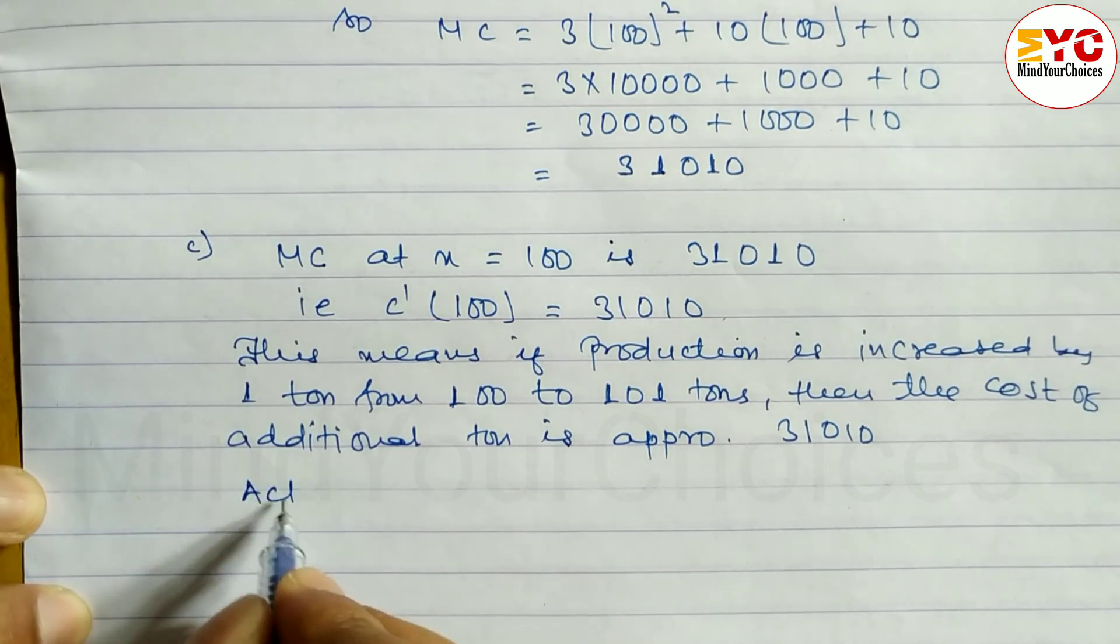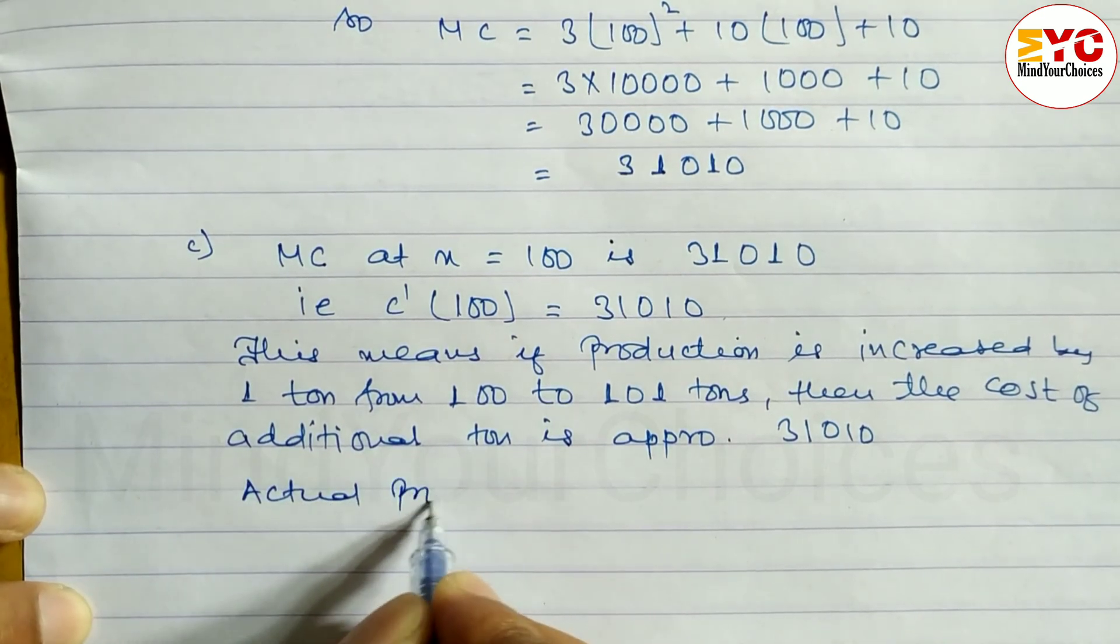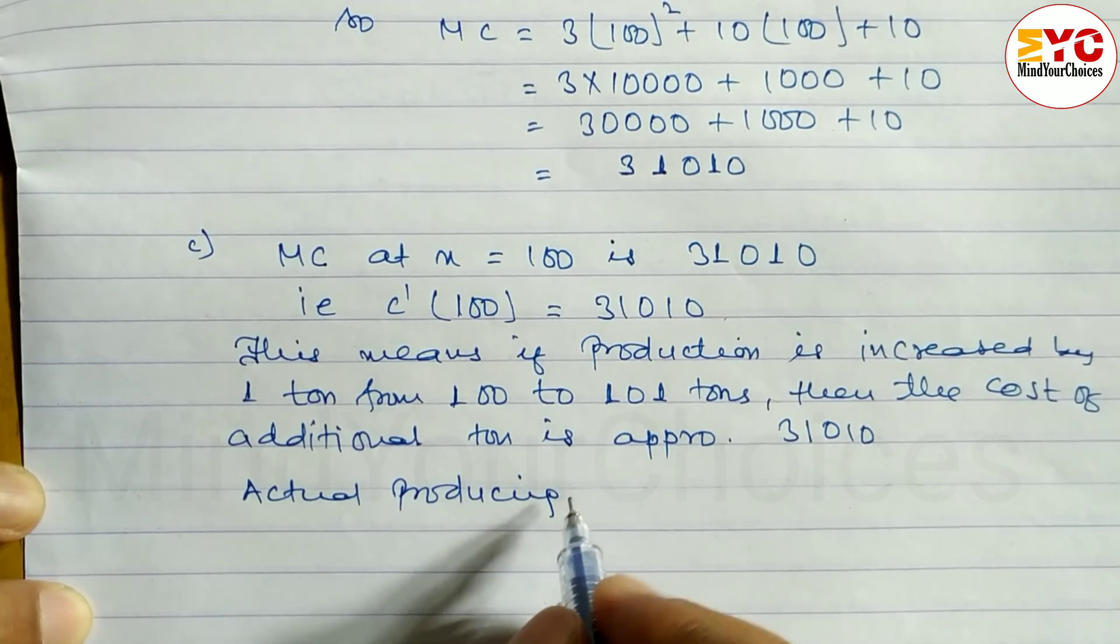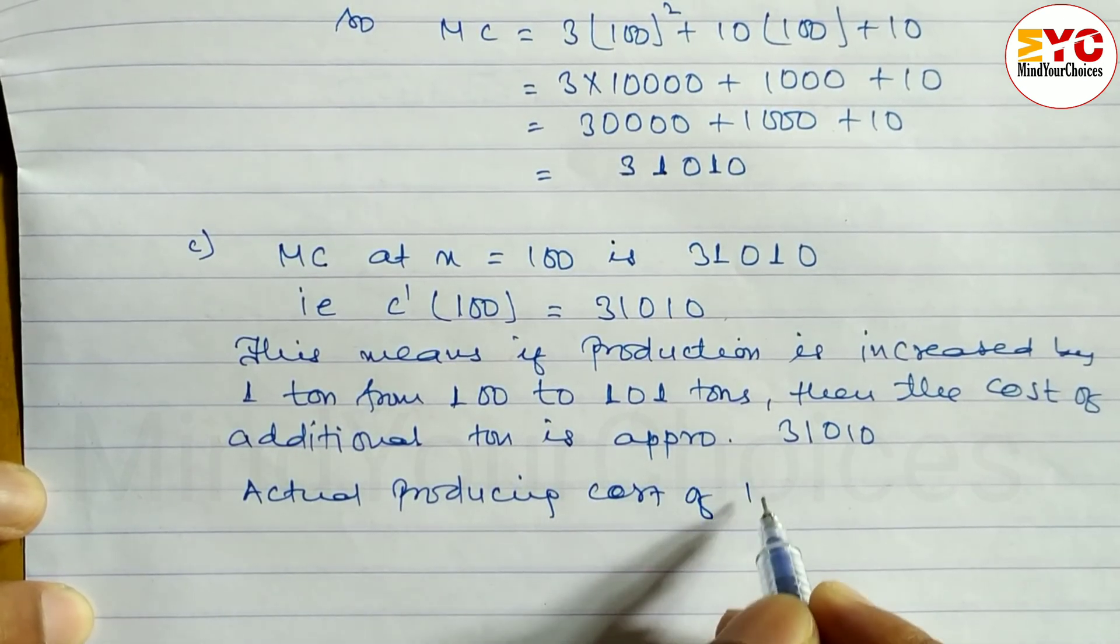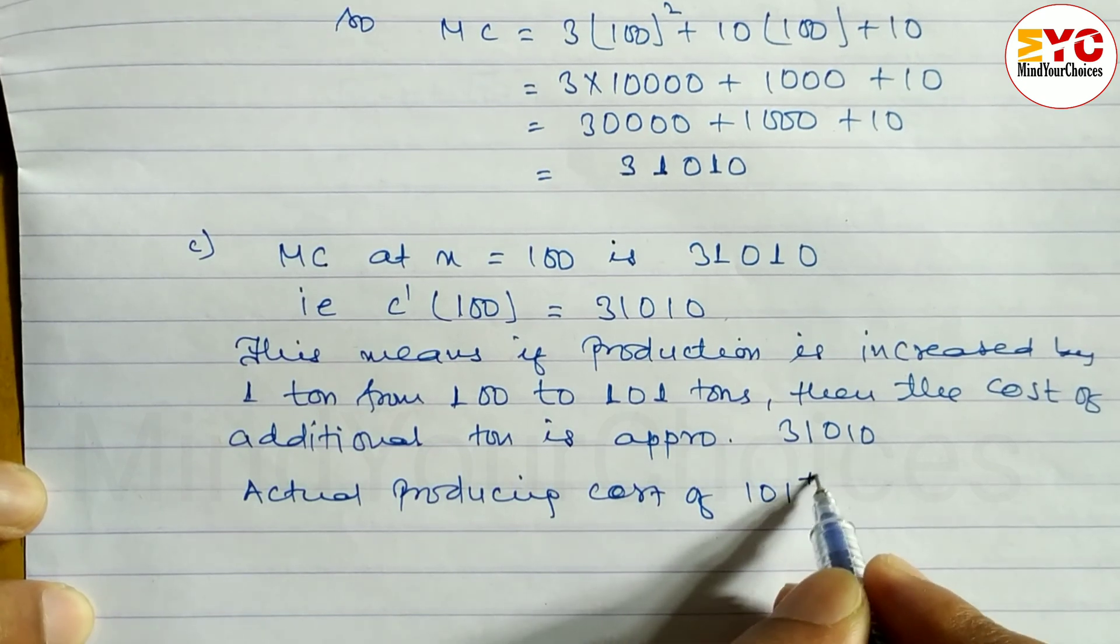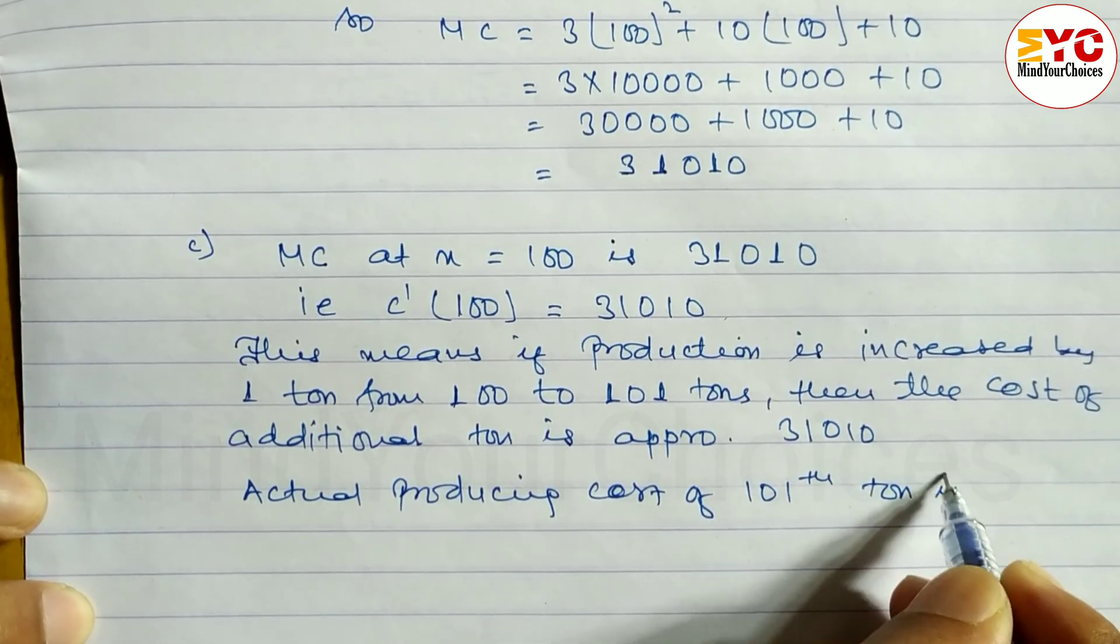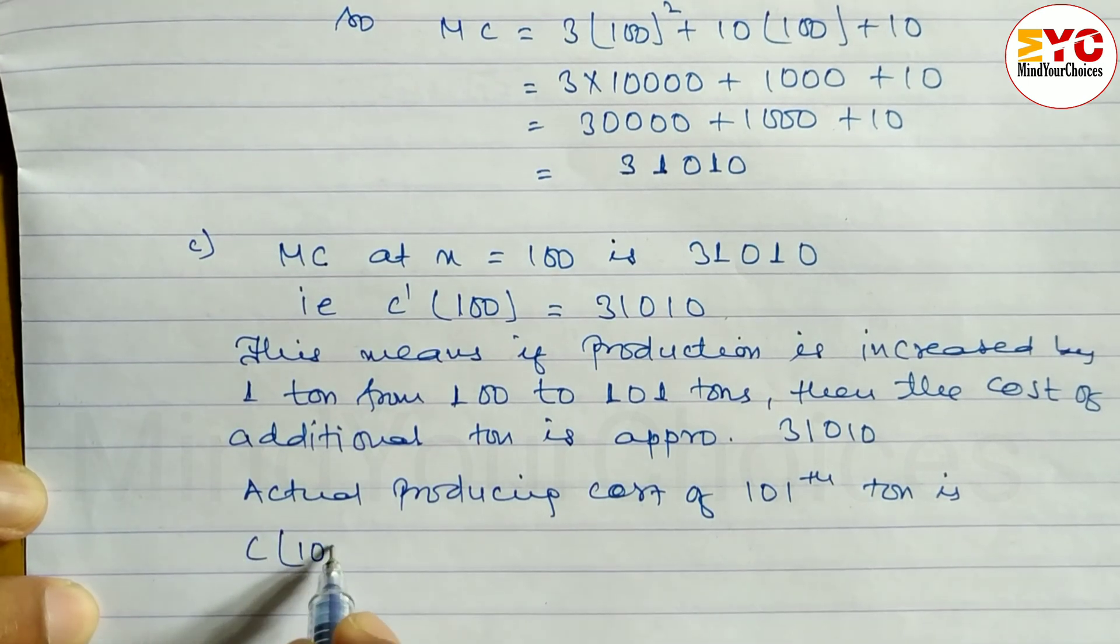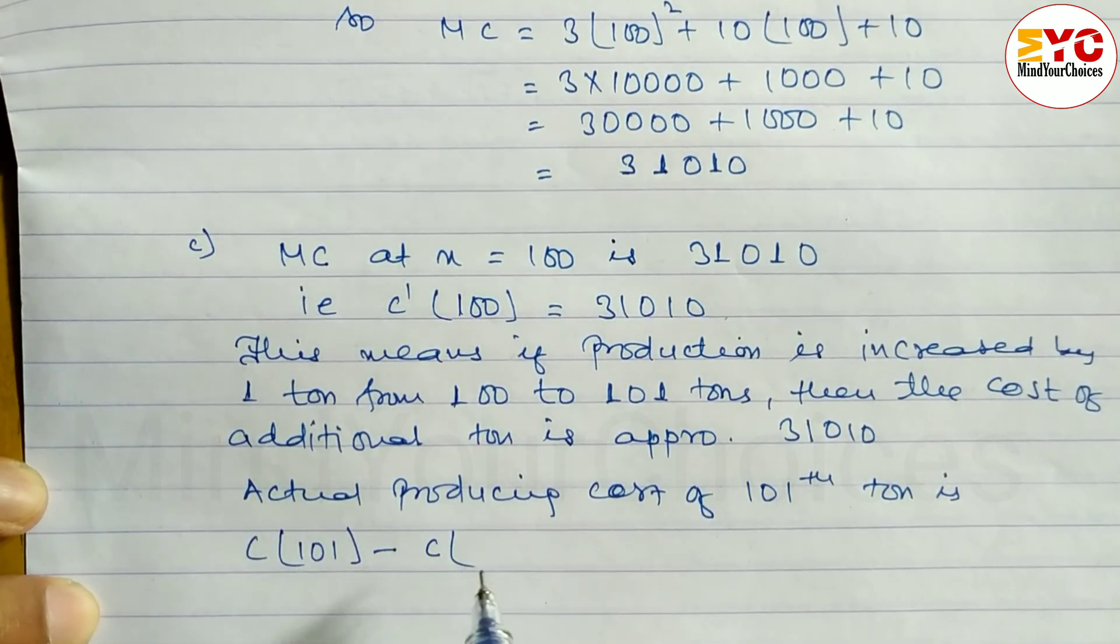Now the actual producing cost of 101 tons: the actual cost of 101 tons is C(101) minus C(100).